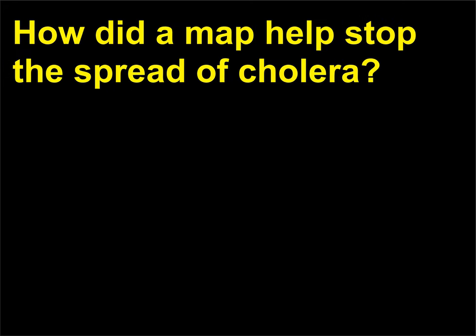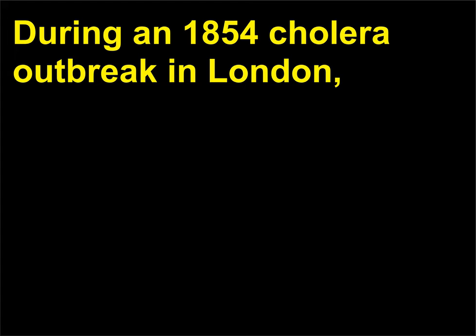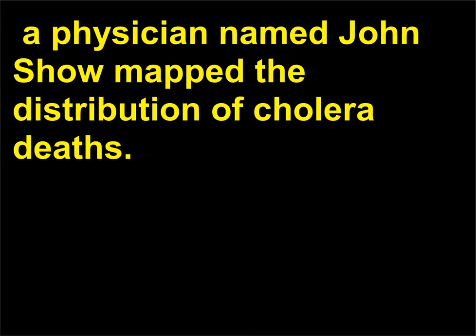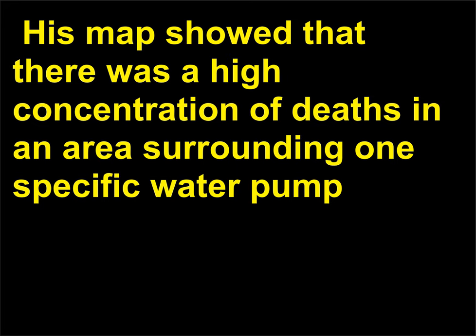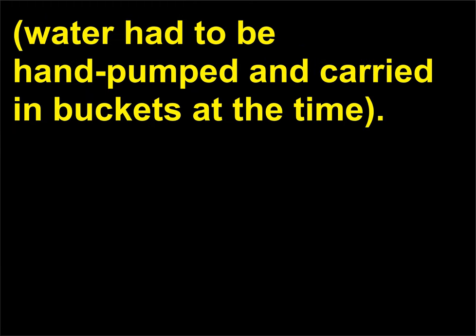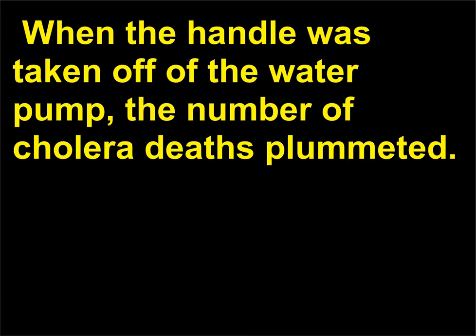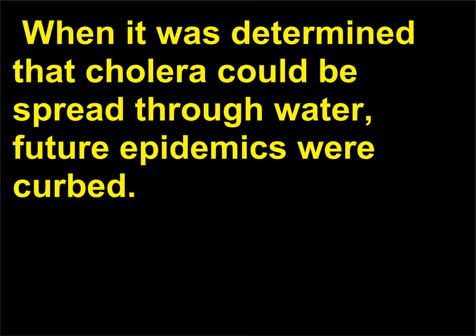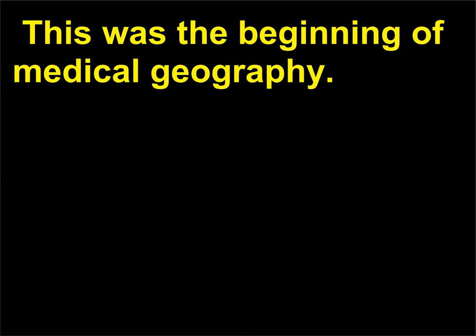How did a map help stop the spread of cholera? During an 1854 cholera outbreak in London, a physician named John Snow mapped the distribution of cholera deaths. His map showed that there was a high concentration of deaths in an area surrounding one specific water pump. When the handle was taken off of the water pump, the number of cholera deaths plummeted. When it was determined that cholera could be spread through water, future epidemics were curbed. This was the beginning of medical geography.